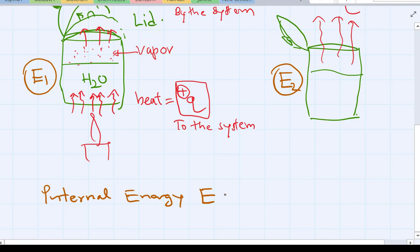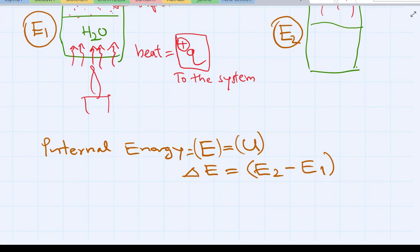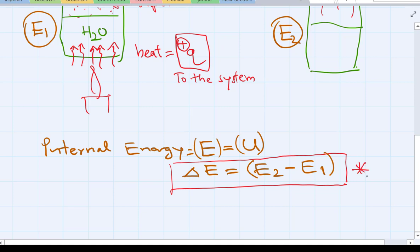That's big E. And sometimes we use big U, depending on whether it's a physics class or chemistry class. And delta E is E final minus E initial, or E2 minus E1. So we're going to use this one quite often.